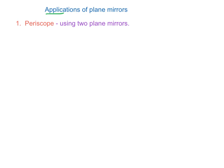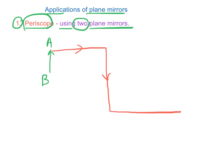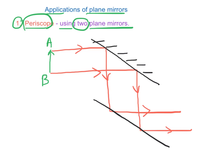The applications of plane mirrors. First, the periscope uses two plane mirrors. A periscope will direct the light from an object AB along the path shown. This is possible when we put two plane mirrors at the position shown so that the light rays can be reflected by the mirrors. Hence, the image seen by the eyes will be reflected.